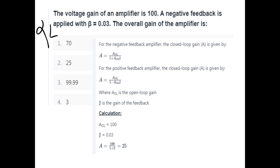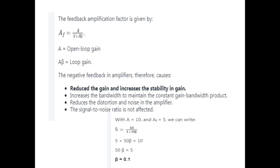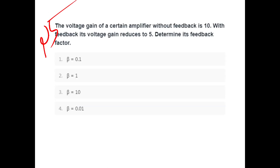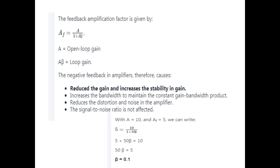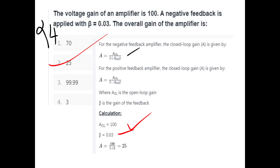The voltage gain is 100 and feedback factor beta is 0.03. Substituting: AOL is open loop gain, closed loop gain answer is 25. For the last question, the voltage gain without feedback is 10 and with feedback is 5. Feedback factor formula: AF equals A divided by (1 plus A·β). AF is 5, solving gives beta equals 0.1.